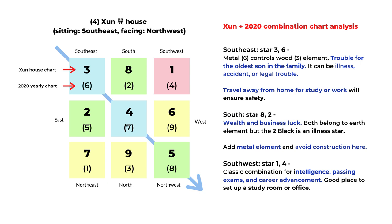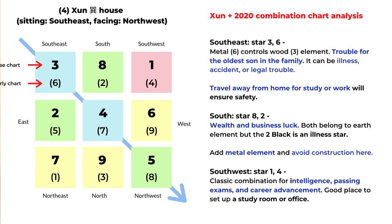The southeast has stars three and six. The six is metal element that controls the wood element, number three. The three-six combination indicates trouble for the oldest son — illness, accident, or legal trouble. The best approach is for the oldest son to travel away from home. The south has a star three and eight combination indicating wealth and business luck, though the number two is an illness star. For number two or number five stars, use metal element to reduce the earth element, and avoid construction here.